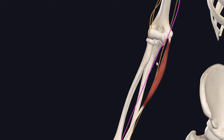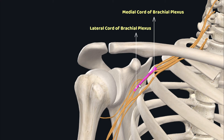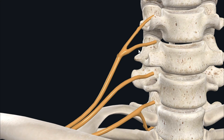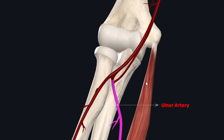The palmaris longus muscle receives its nerve supply from the median nerve, which arises from both the medial and lateral cords of the brachial plexus, with nerve fibers from the seventh and eighth cervical spinal nerve roots. In terms of arterial supply, the palmaris longus receives its supply from the ulnar artery, which gives off a branch called the anterior ulnar recurrent artery.